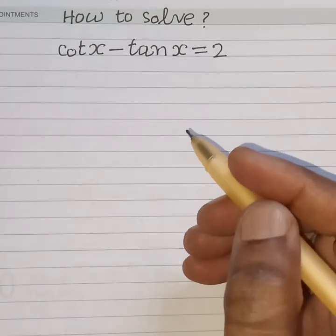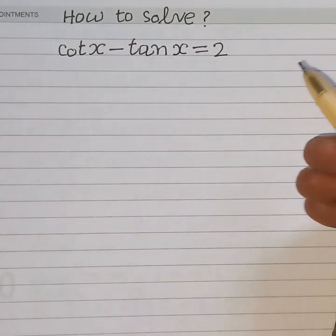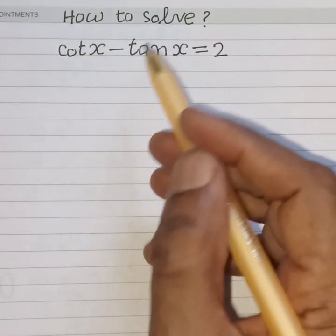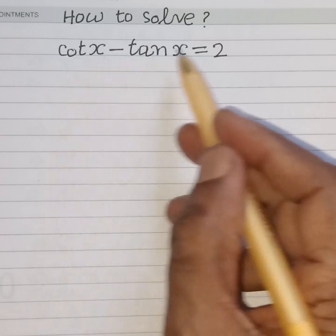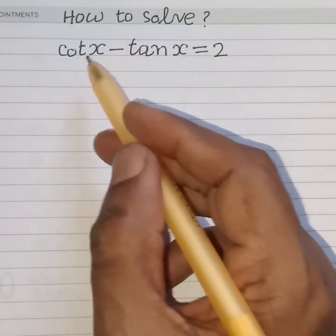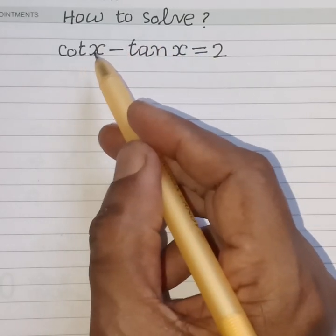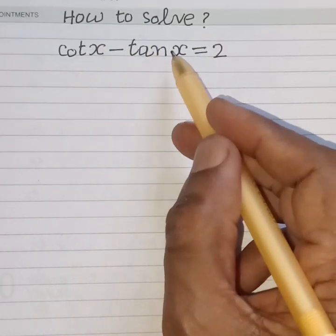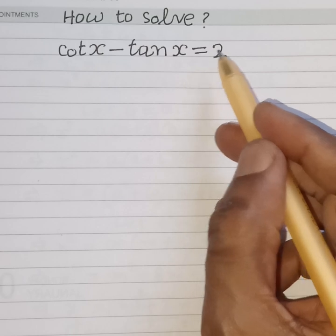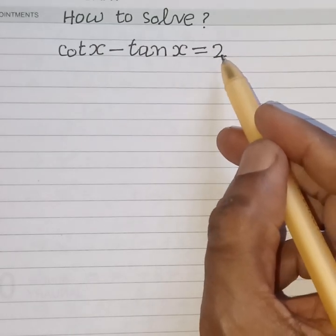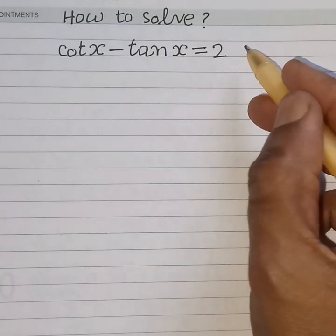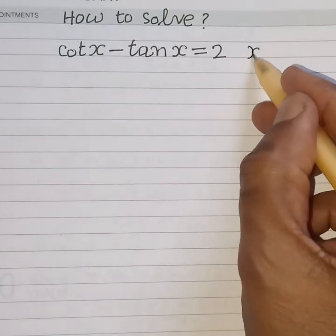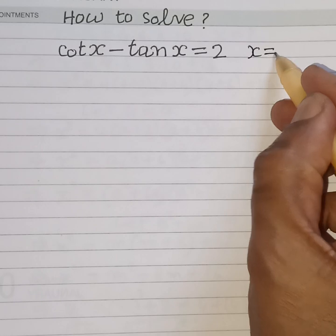Hello friends, welcome. How to solve this equation: cot x minus tan x is equal to 2. What is the value of x?